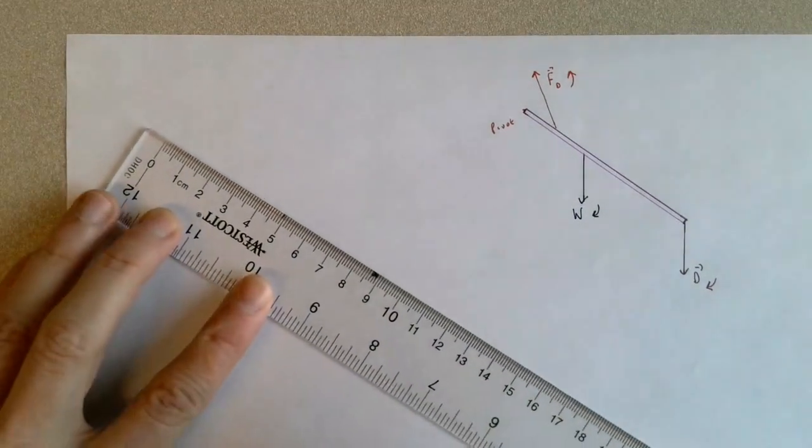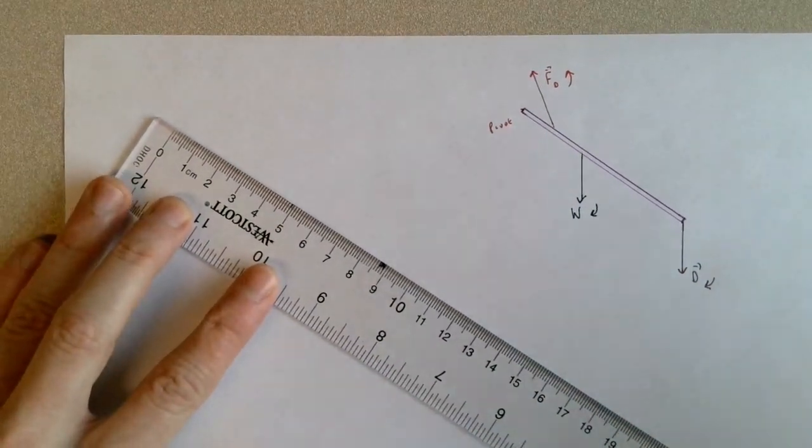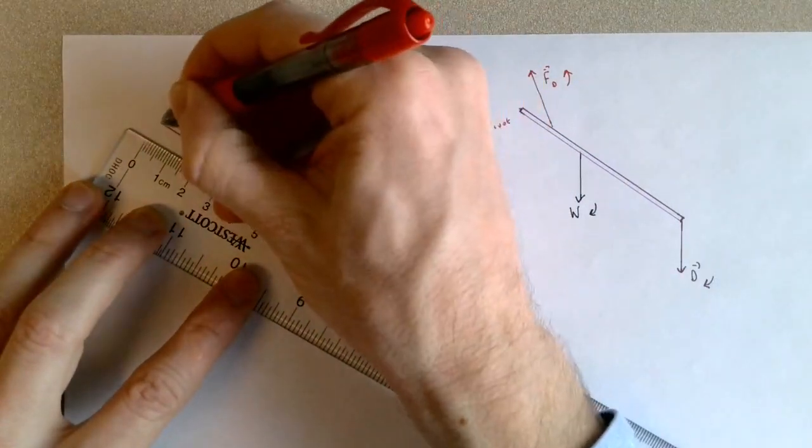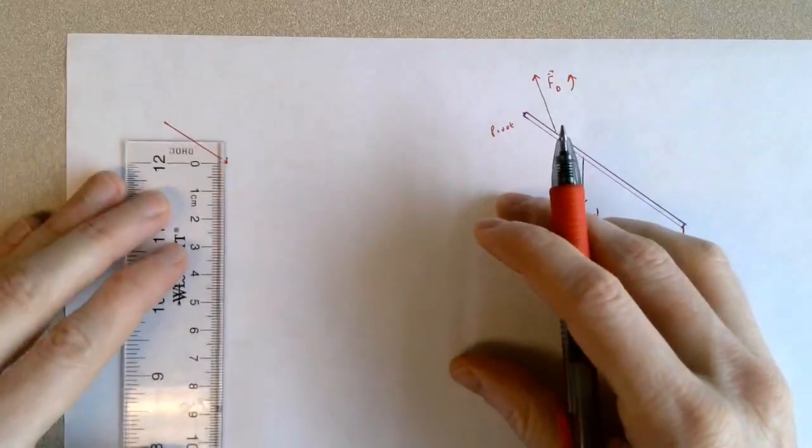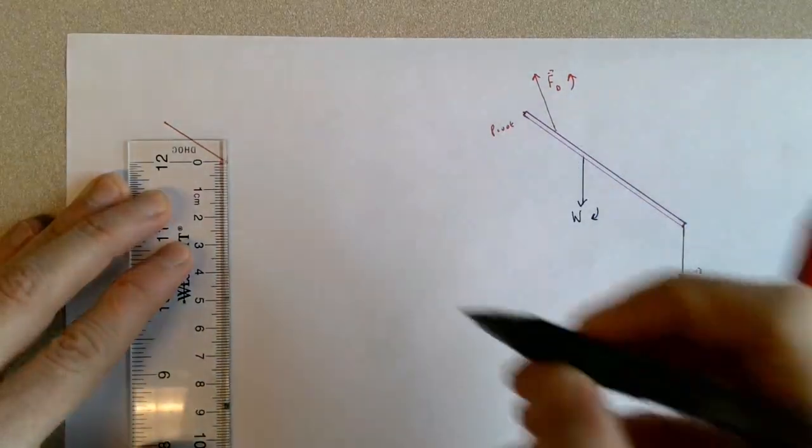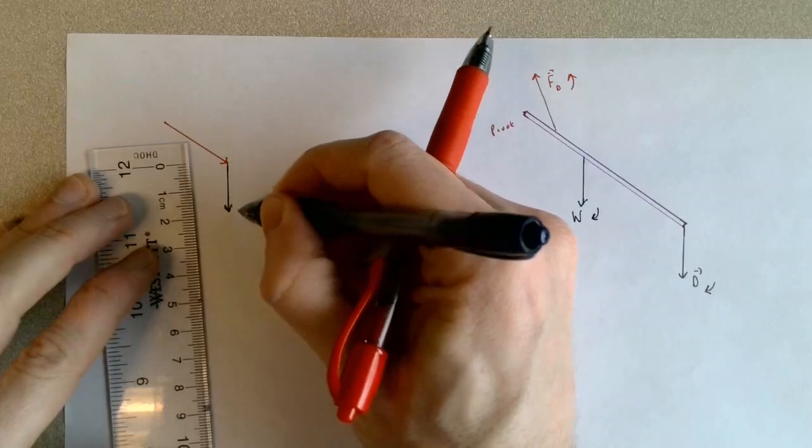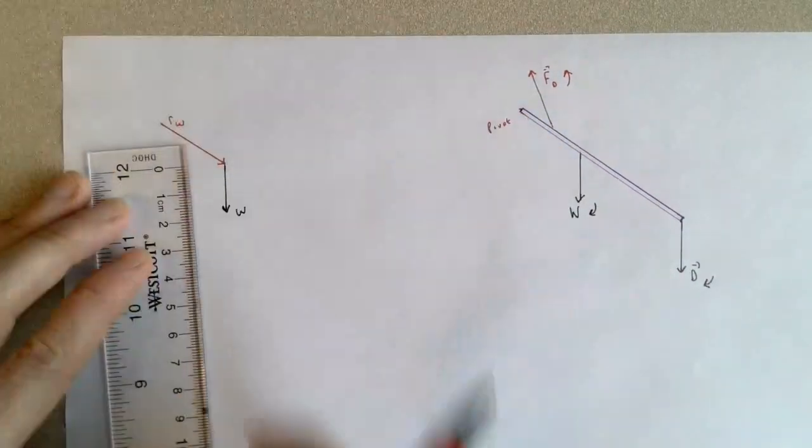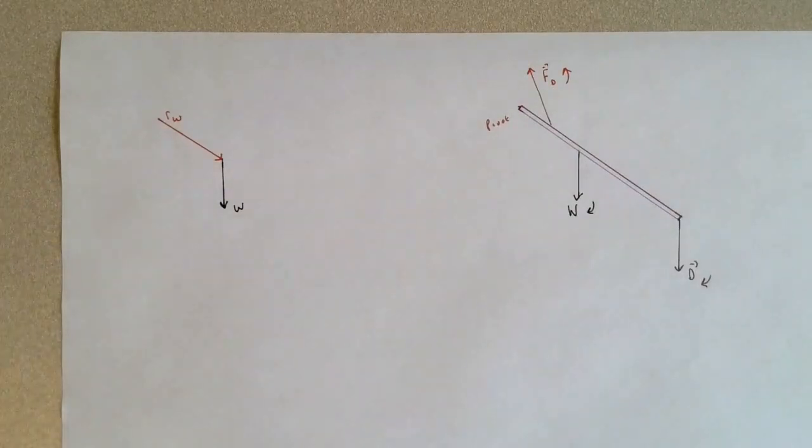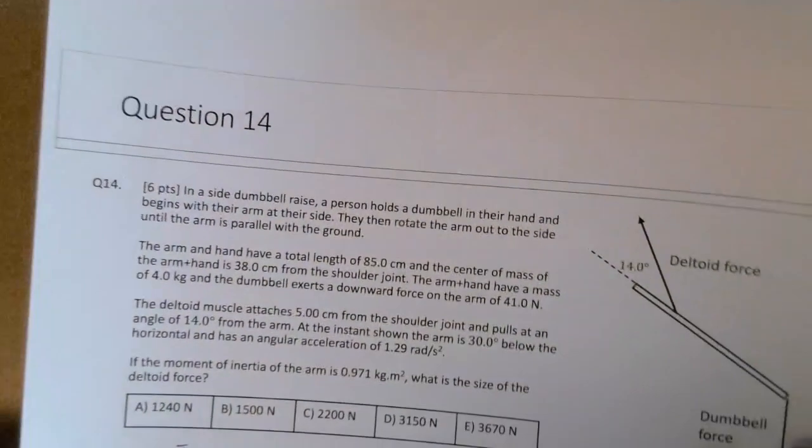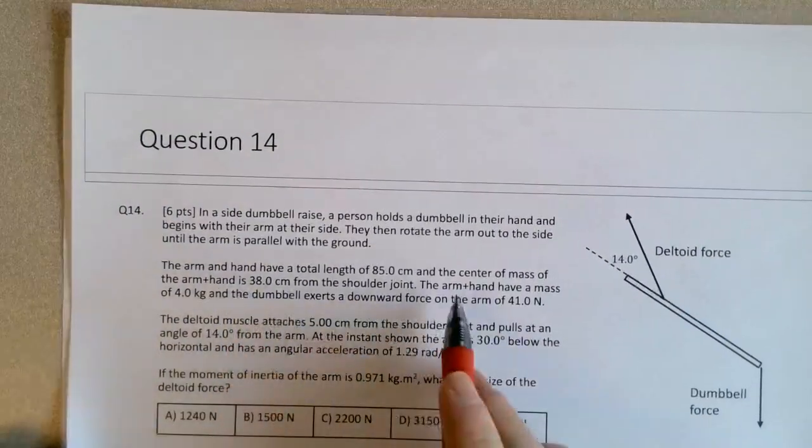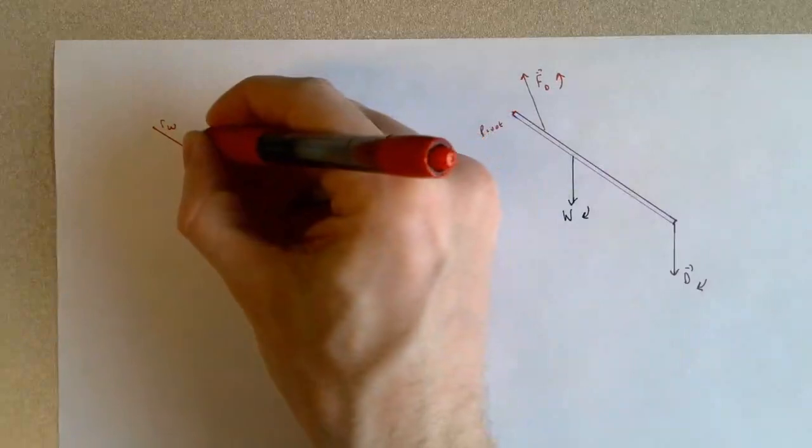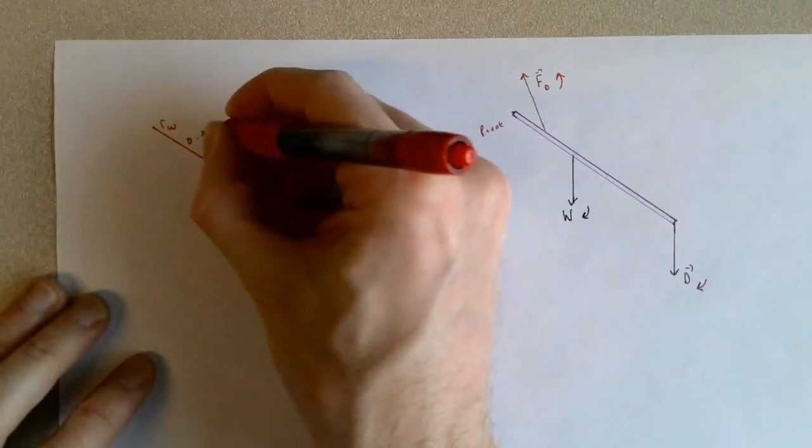I'll do this in a little more detail. The R vector for the weight force points from the pivot down to where the weight force acts. I'll draw my weight force here. This is Rw. I'm told in the problem that this is 38 centimeters, so the center mass of the arm and hand is 38 centimeters from the shoulder joint. So I know this is 0.38 meters.